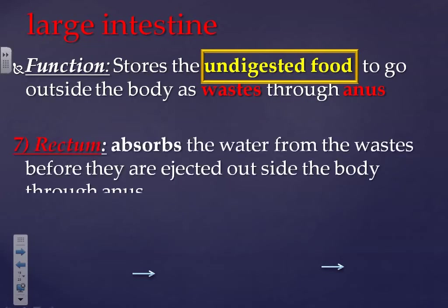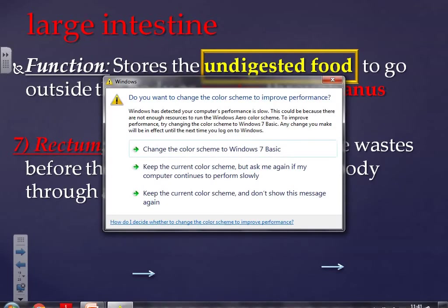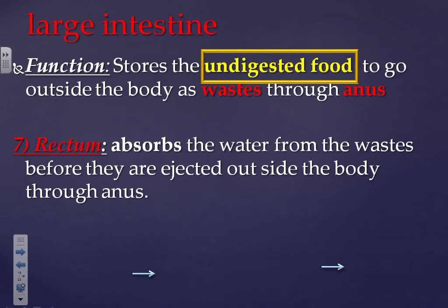After the large intestine we have the rectum. The function of the rectum is very important: it absorbs water from the wastes before they are ejected outside the body through the anus. So the large intestine stores the undigested food as waste, and the rectum absorbs water from the wastes before they leave the body.